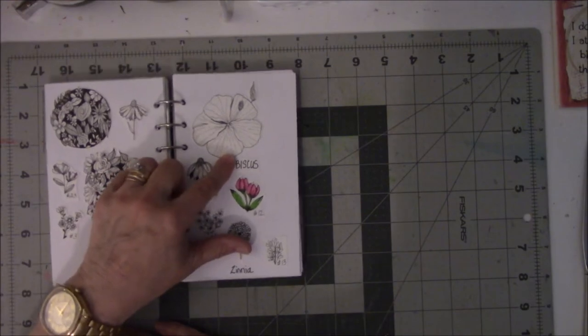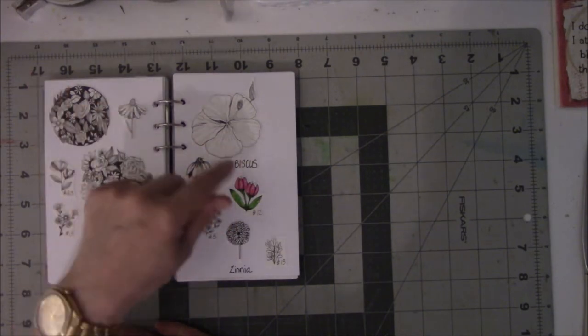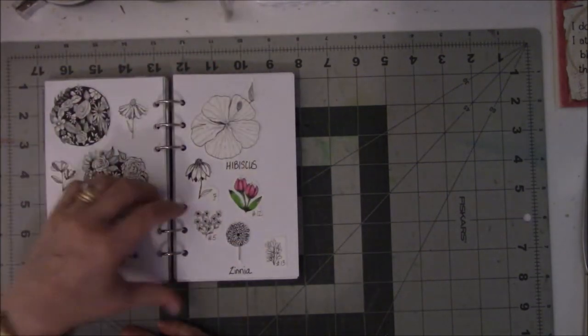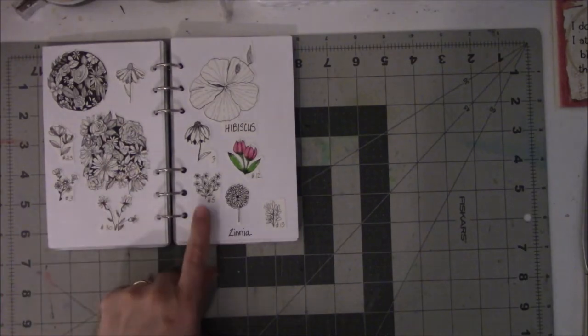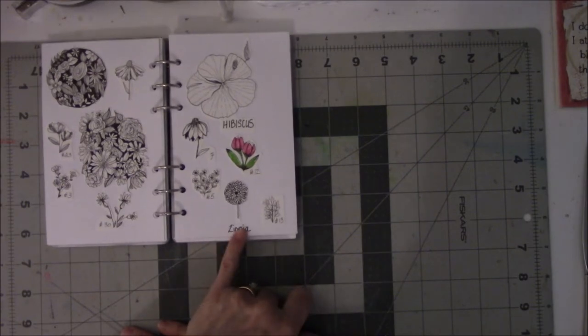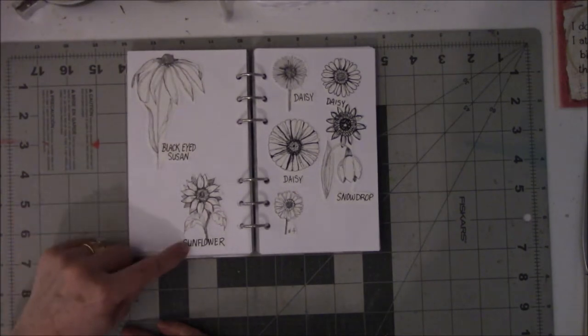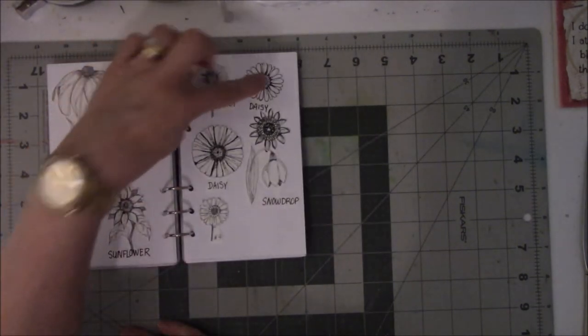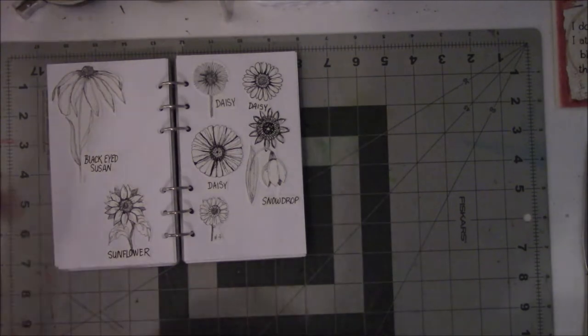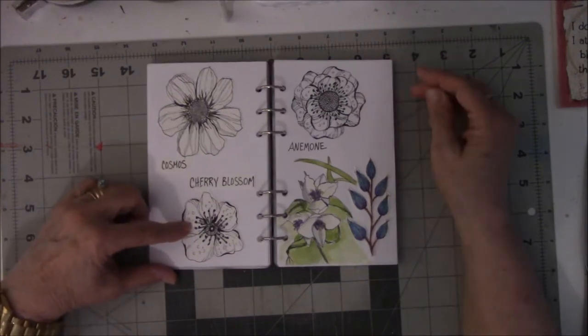Then I saw a friend's daughter's photograph of a hibiscus, so I decided to draw the hibiscus. Since then, Alice has done it. This is unknown flower 7, 5, 13, tulips are number 12, and then there's a Xenia. This is a black-eyed susan, sunflower, and daisies. I didn't know there were so many different shaped daisies. Then cosmos, cherry blossom, and anemone.